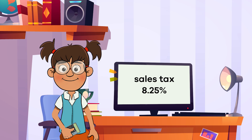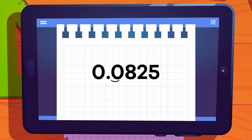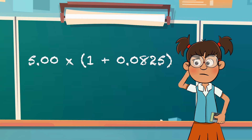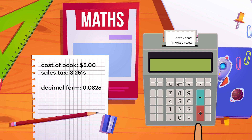After some research, Frankie finds out that the sales tax for the book is 8.25%. First, she has to change the sales tax percentage to a decimal — like this: 8.25% equals 0.0825. Next, she needs to multiply the sales price of the book by 1 plus the decimal she just figured out. 1 plus 0.0825 equals 1.0825. So she will need to multiply $5 by 1.0825.